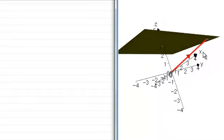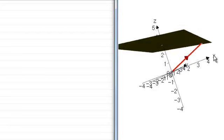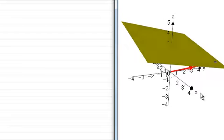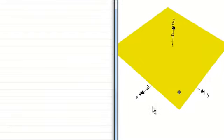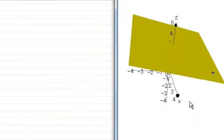What I've got here is a plane drawn in three dimensions relative to a fixed origin and three perpendicular axes x, y, and z.